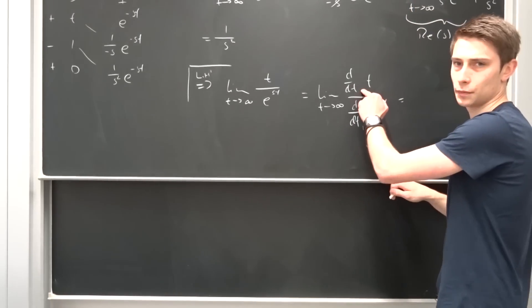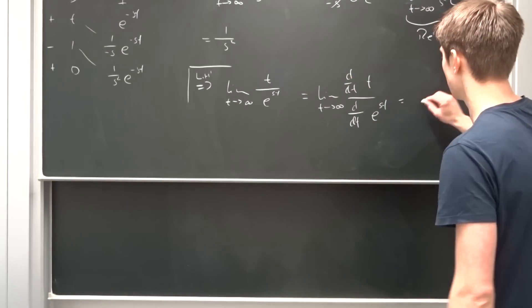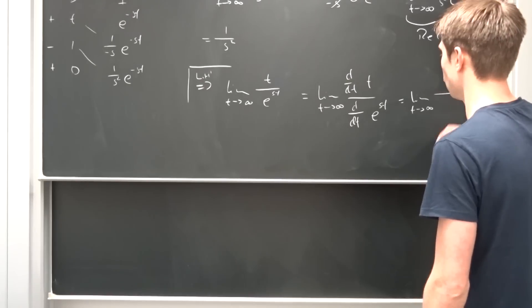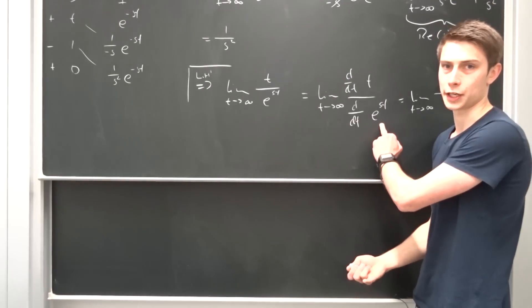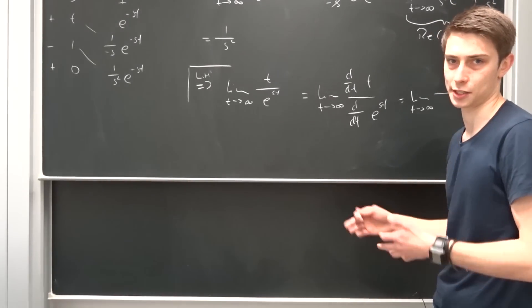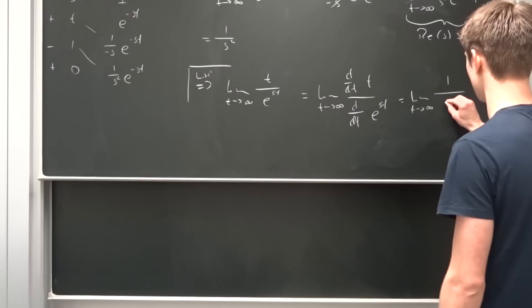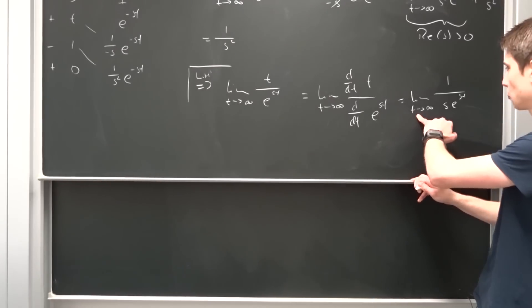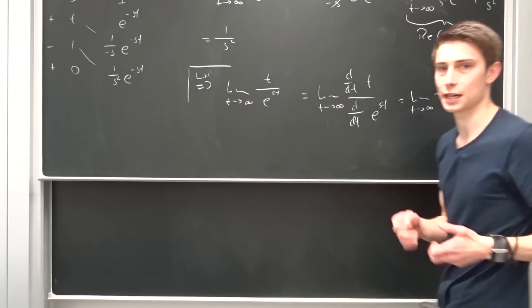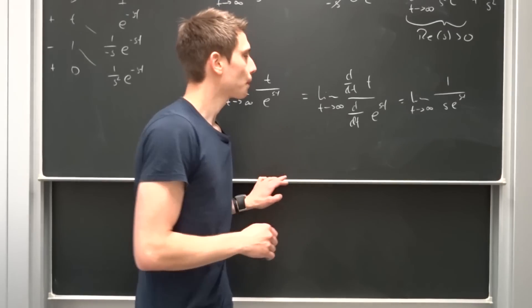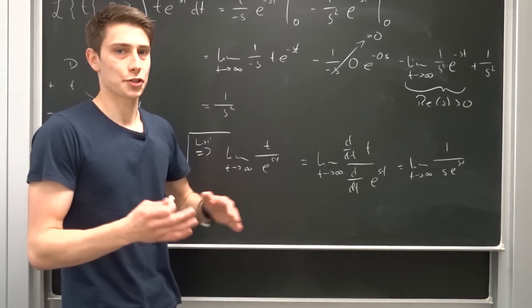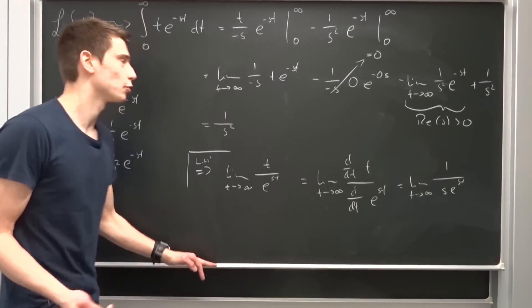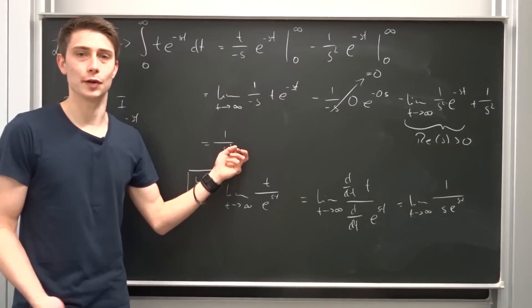And this is finally, well the numerator is just 1 in this case. So that's limit as t approaches infinity of 1 over, and well if we differentiate e to the st this is just s times e to the st. So it's s times e to the st. And if we let t approach infinity that would mean that it's 1 over infinity and this goes to 0. So this first part also holds under the condition that the real part of s is greater than 0 and then we are done. So the Laplace transform of t is just 1 over s squared.